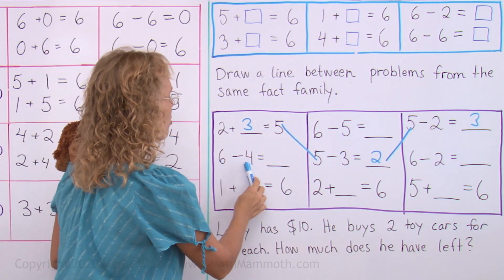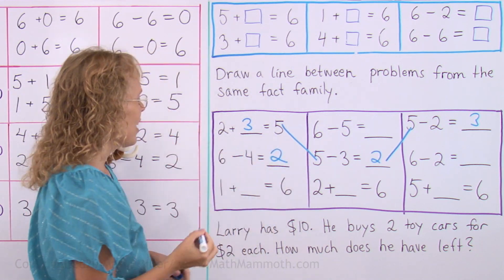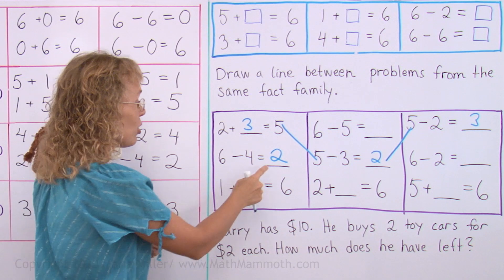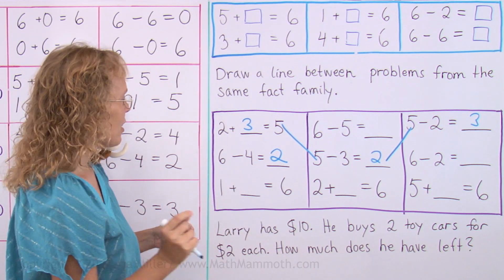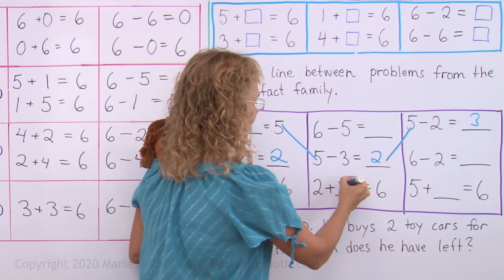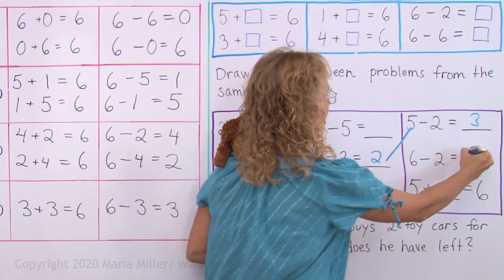Then six minus four equals two, right. So this fact family is using two and four and six. So where else are problems that use two and four and six? Over here, right? And then this one.